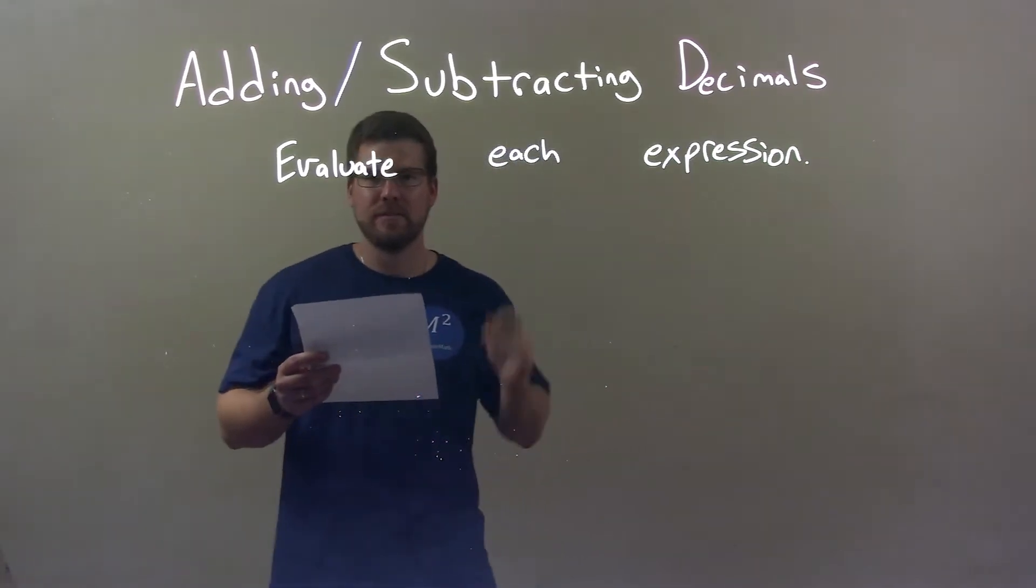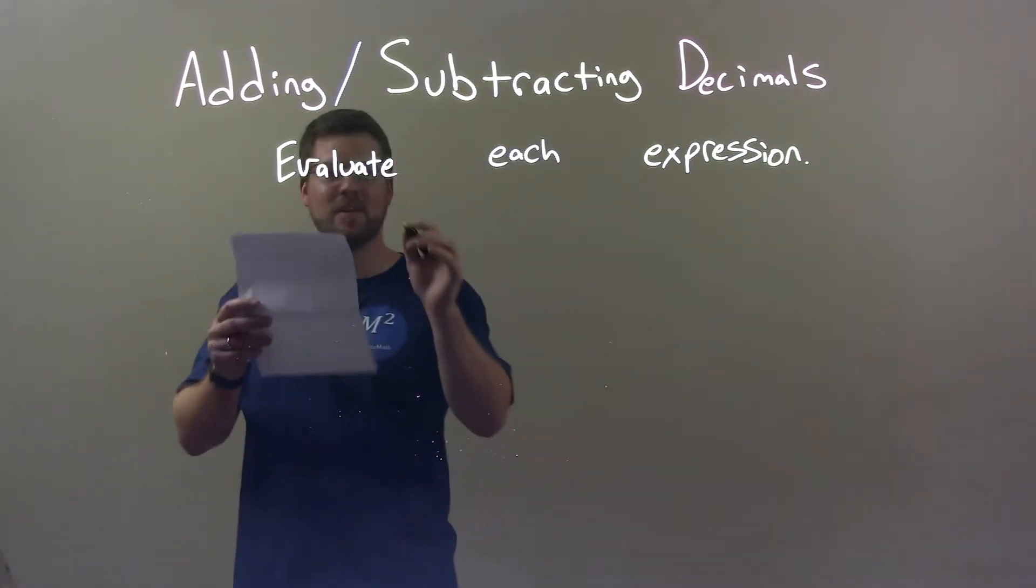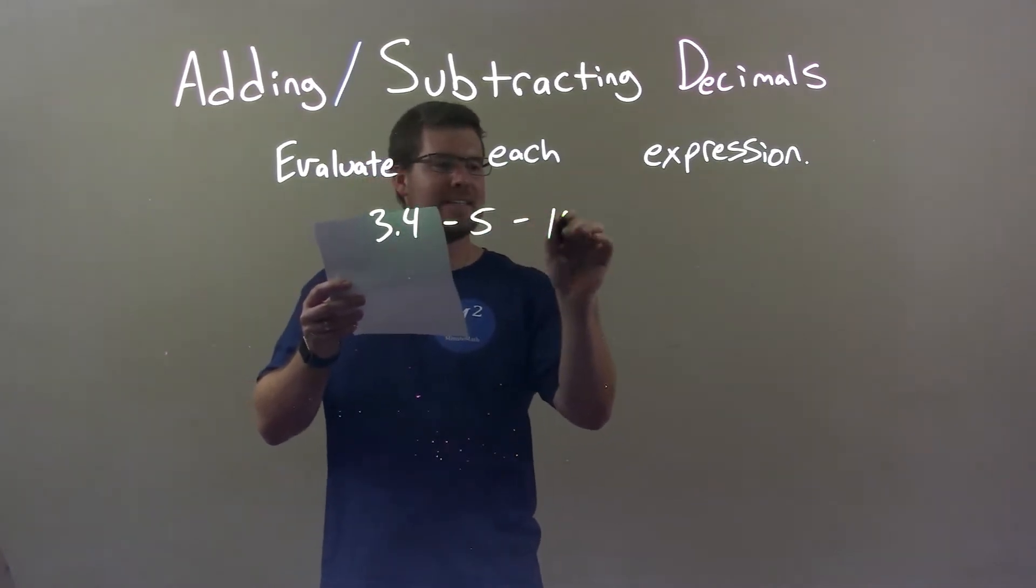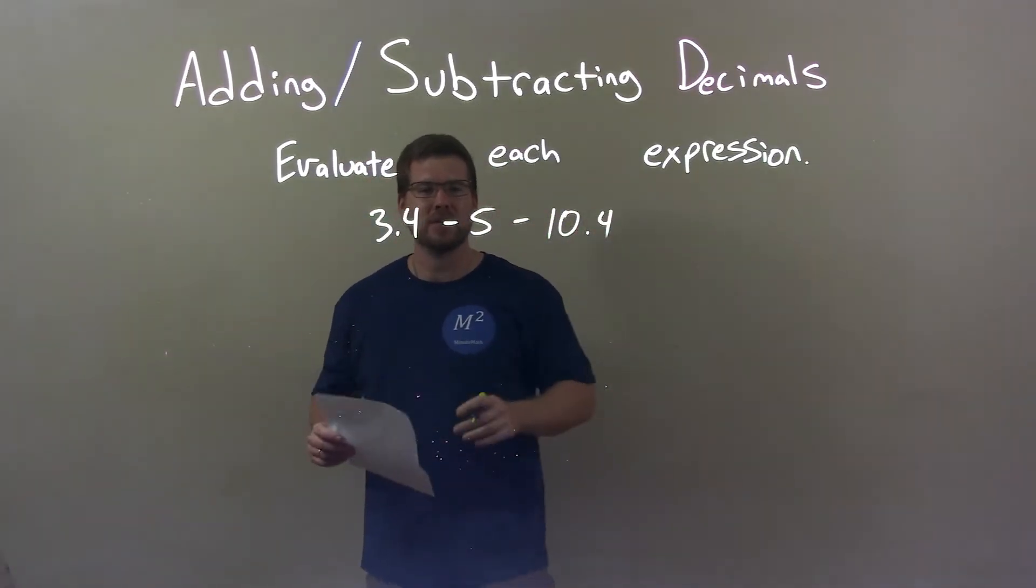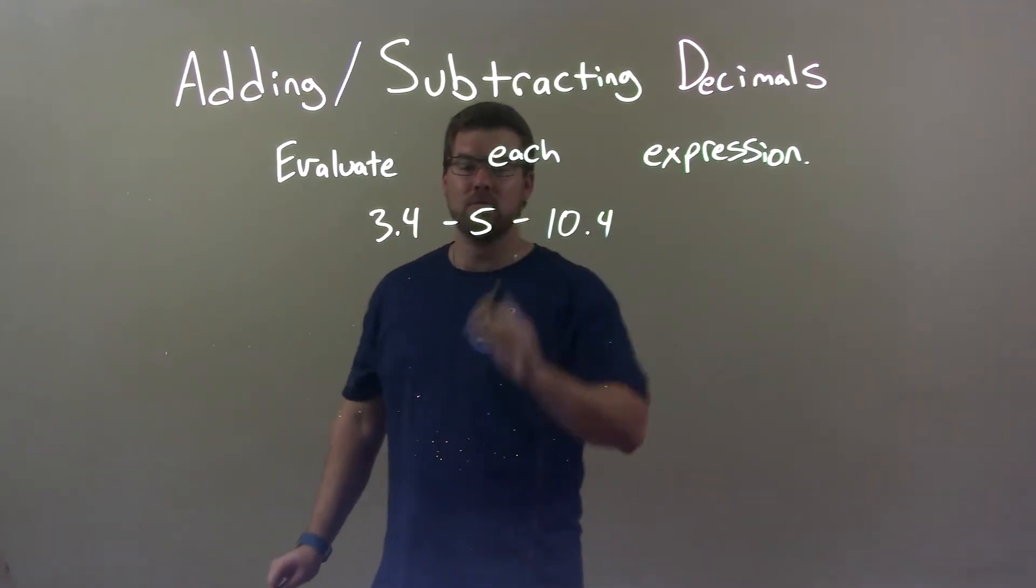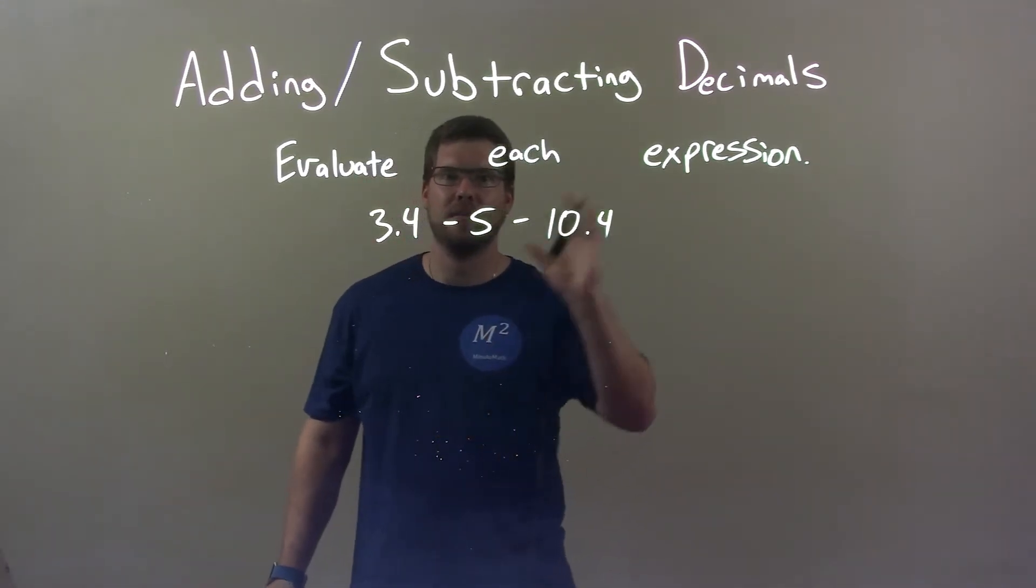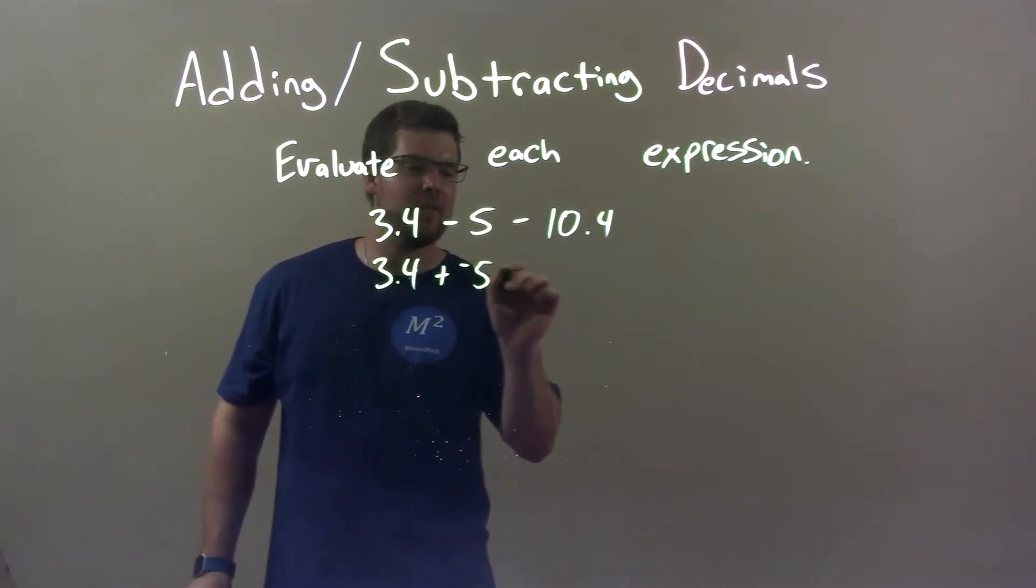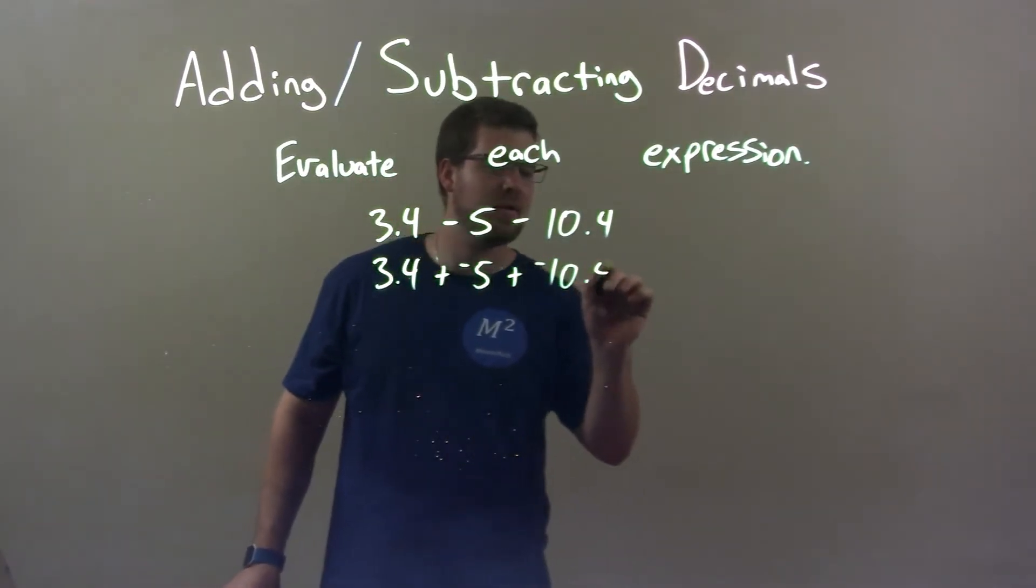If I was given these decimals, 3.4 minus 5 minus 10.4. What I'm actually going to do here, I'm going to write these subtractions as adding a negative. I think it's easier to see. So, 3.4 plus a negative 5 plus a negative 10.4.